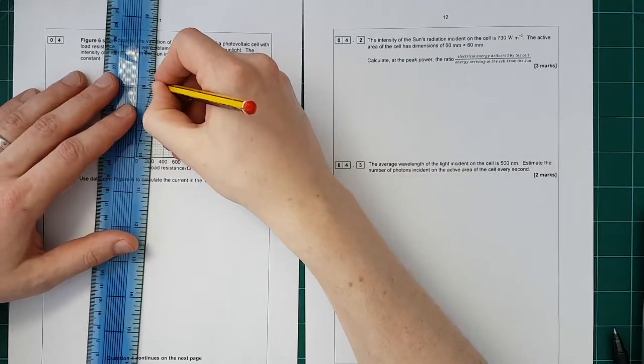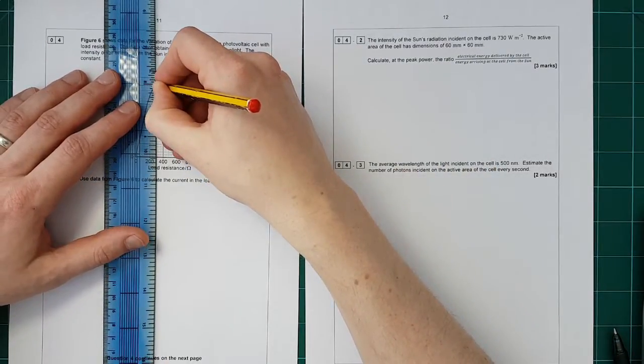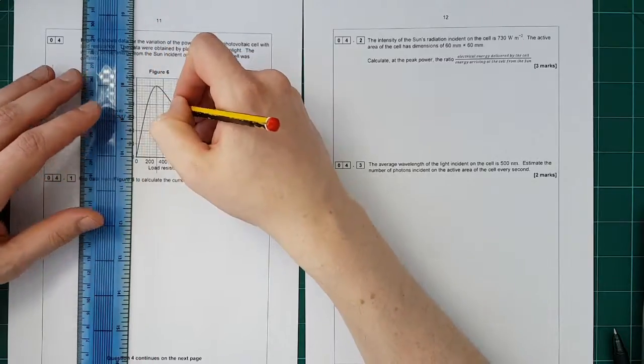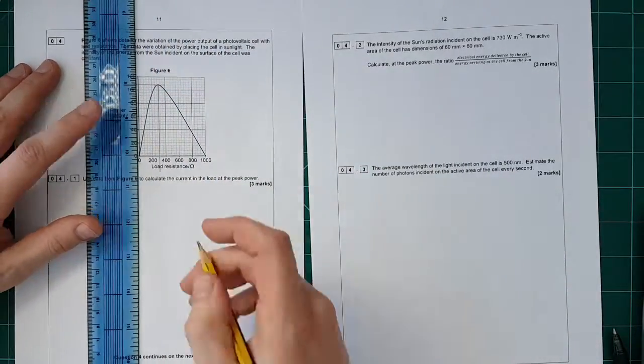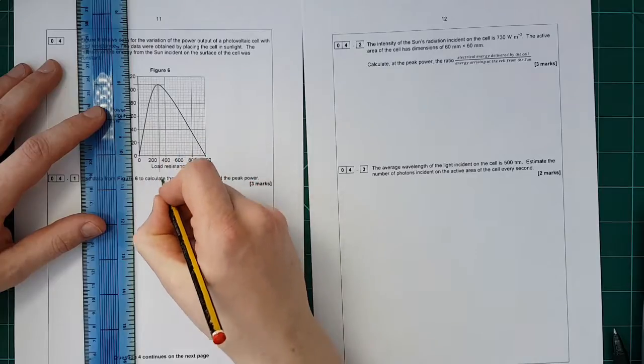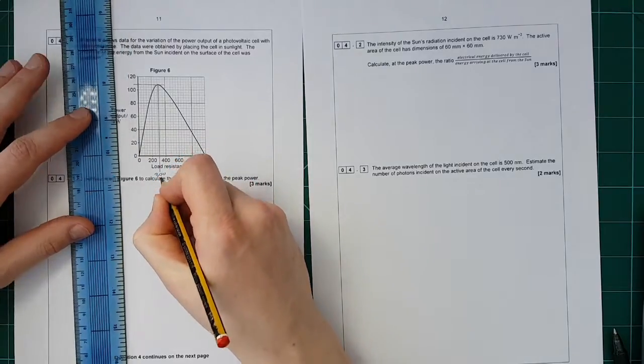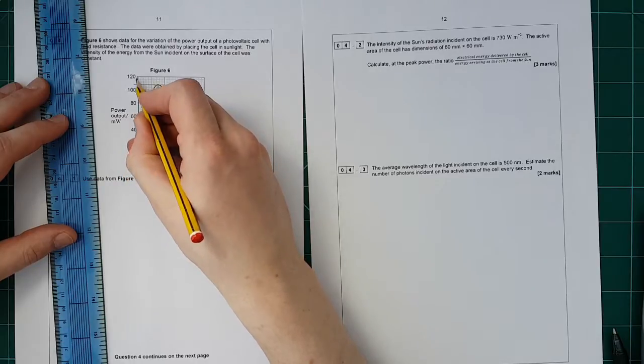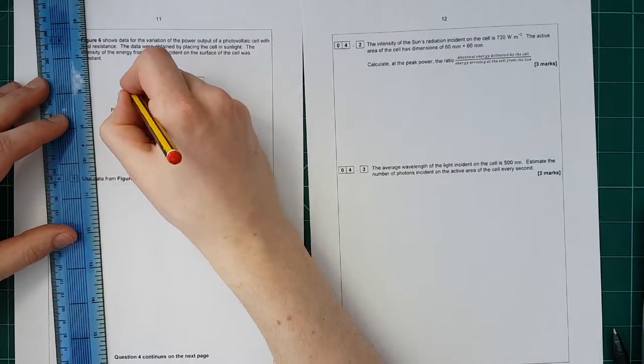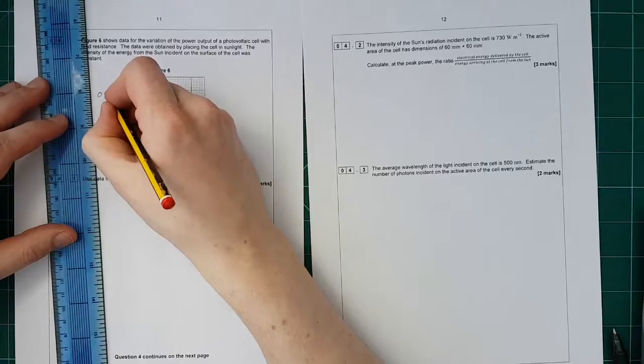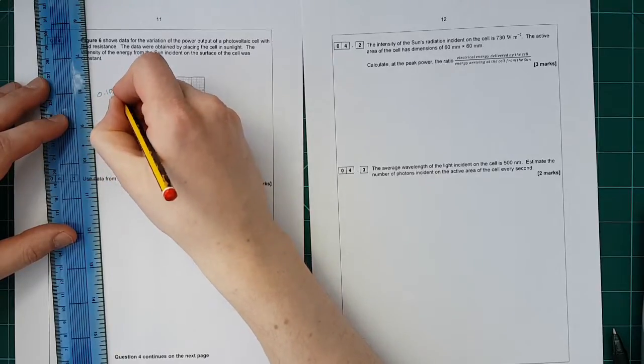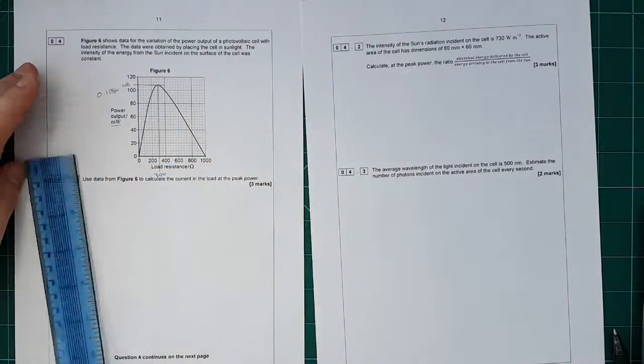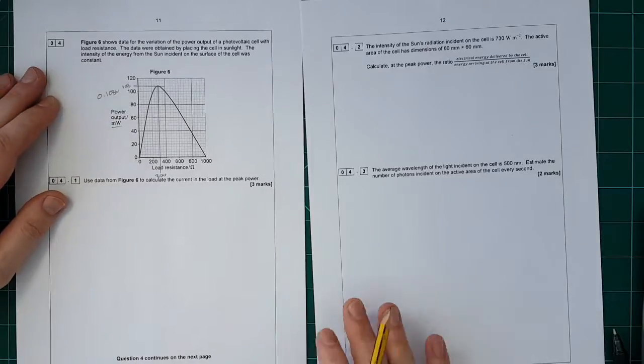We need the resistance at that as well. To me, that looks like it's exactly halfway between there and there, so that's 300. And that is... each of these boxes is 4, so that's 108, or 0.108 watts, because that's in milliwatts.